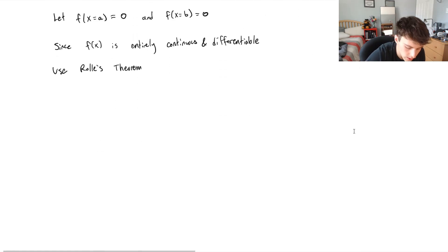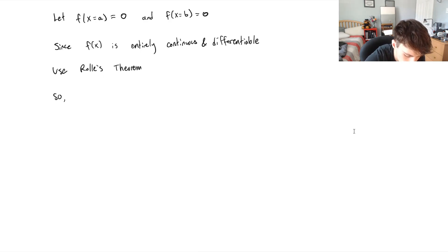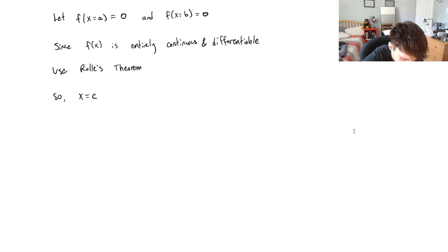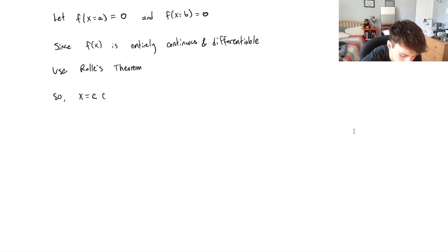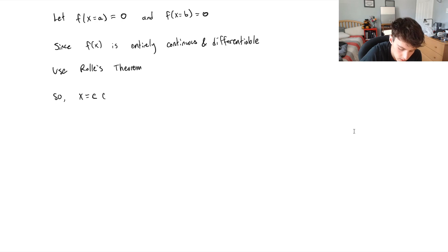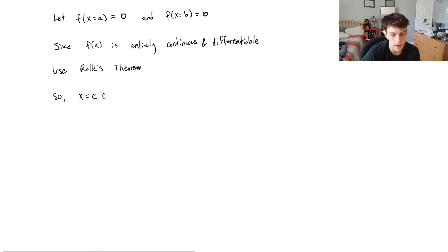By Rolle's Theorem, we know that there is some c that exists between a and b where the derivative of the function at that value of c must be equal to zero.